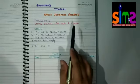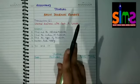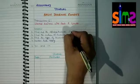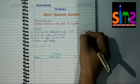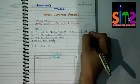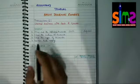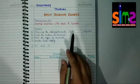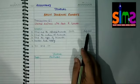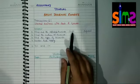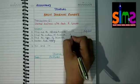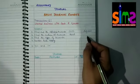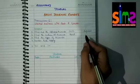When we start business with cash, two accounts are affected: one is cash and second is capital. The second step is to find the nature of account — what is the nature of cash account and capital account. Cash is an asset, whereas capital is contributed by the owner.